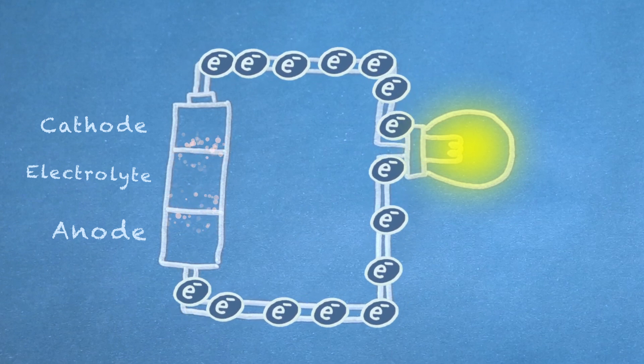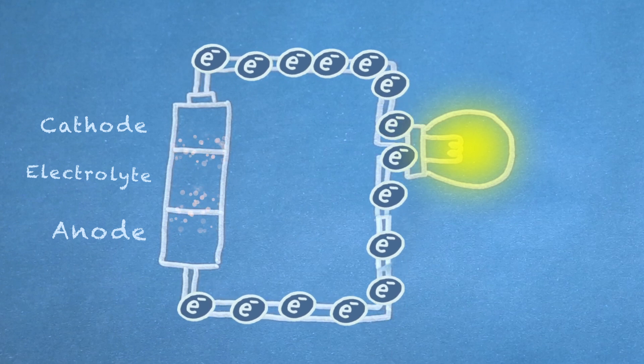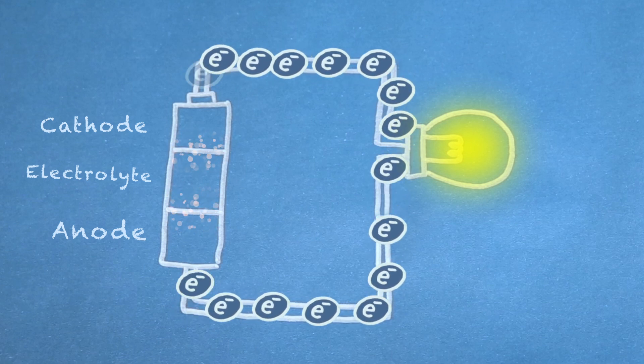This allows us to put the electron flow to work in our circuit by doing things like lighting LEDs, spinning motors, and running microcontrollers. The chemicals in a battery will ultimately reach a state of equilibrium, and that means they won't react with each other, and the electrons will stop flowing.